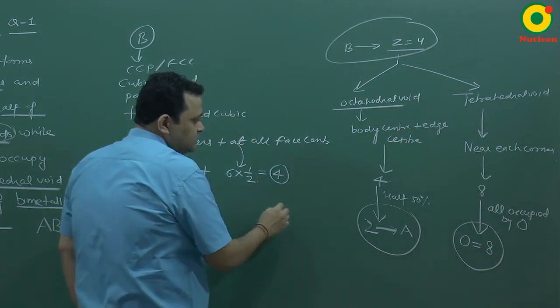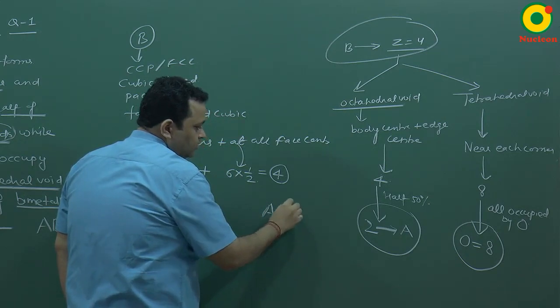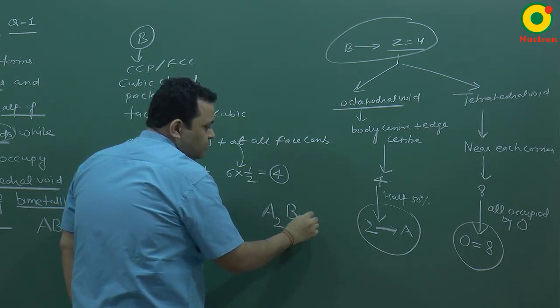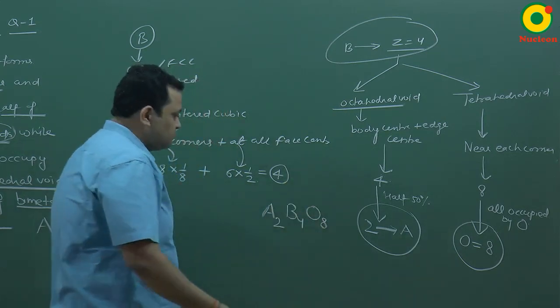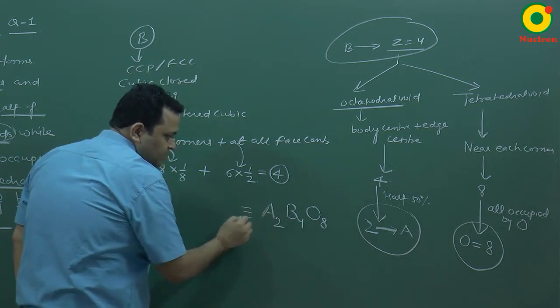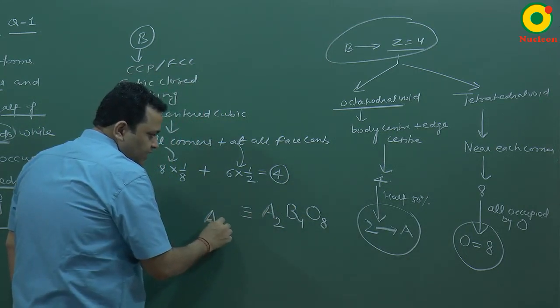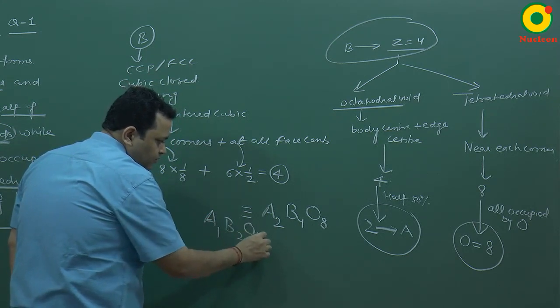Combine it. I will write it A is 2, B is 4, and oxygen is 8. We will simplify it and divide it. We can write it A is 1, B is 2 and O is 4.